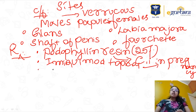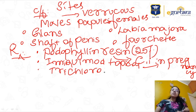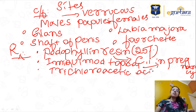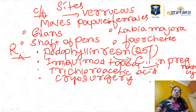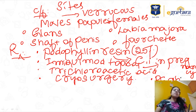Trichloroacetic acid can be given in pregnancy. The fourth option is cryotherapy or cryosurgery — you can destroy the lesion using cryosurgery. You can also use radiofrequency ablation or laser and surgical excision, but the recurrence rate is more common.